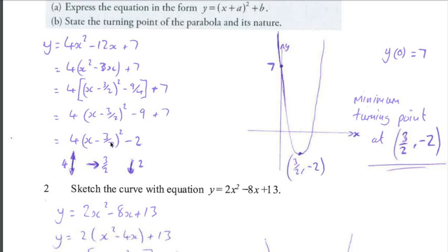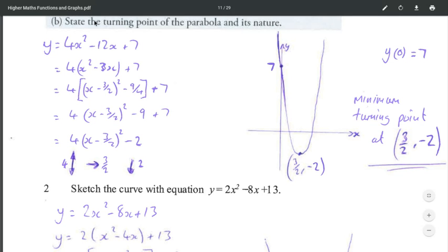The x minus 3/2 all squared, rather than x squared, will move the graph 3/2 to the right. So rather than going through here, it's going to move along and do that. And then the minus 2 will move the whole graph down by 2.